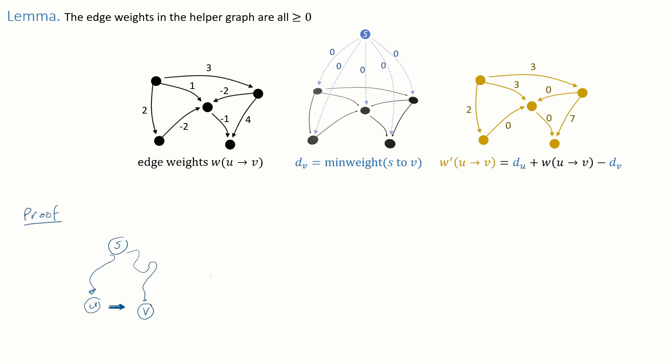And now the proof. Let's consider an arbitrary pair of vertices, u and v, with an edge between them. The big idea of edge relaxation, the whole basis of Dijkstra's algorithm and of Bellman-Ford, was this: that the min weight to v must be less than or equal to the min weight to u plus the weight of the u to v edge. This is just saying the path from s to v via u is a legitimate path to v. It's one of the candidate paths that we should be considering, and the min weight from s to v must be as good as this path or better.